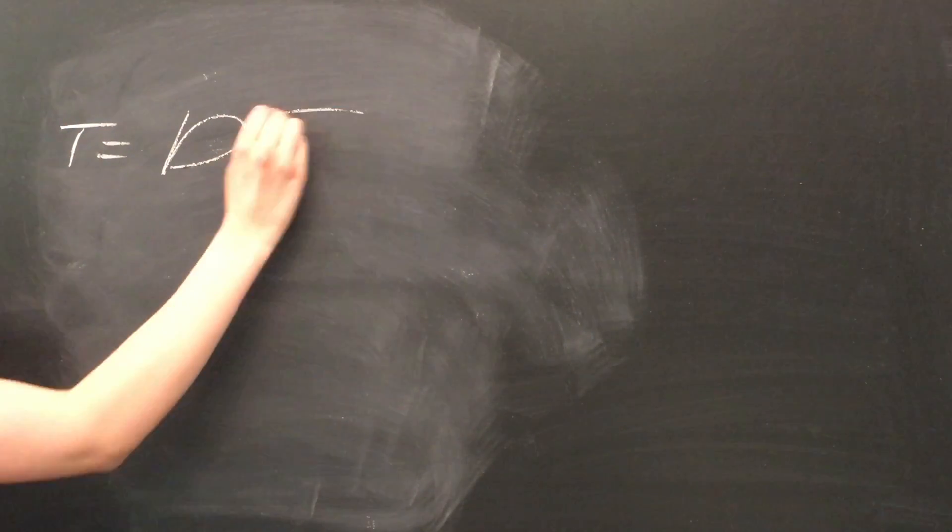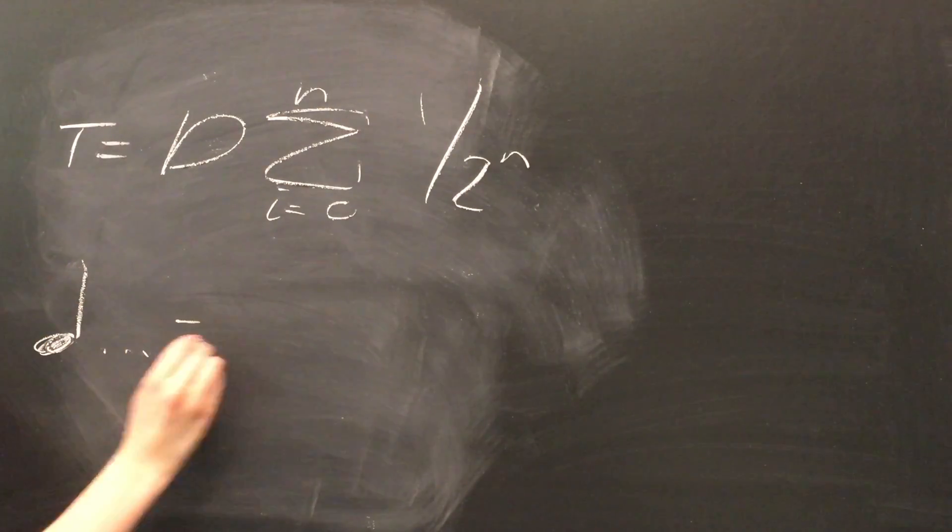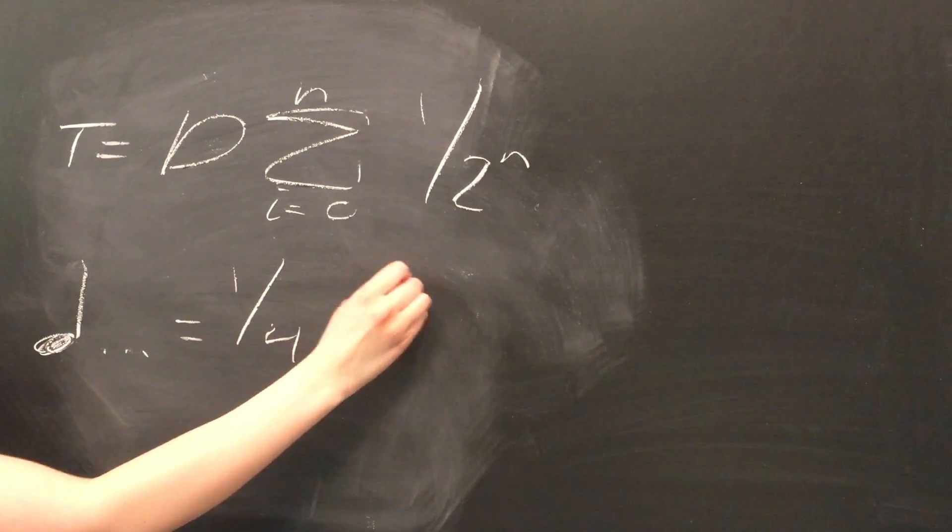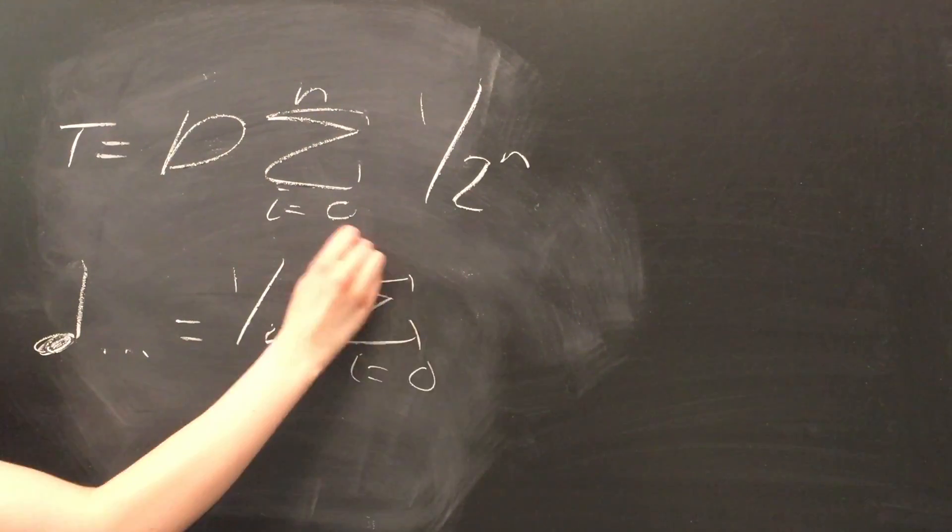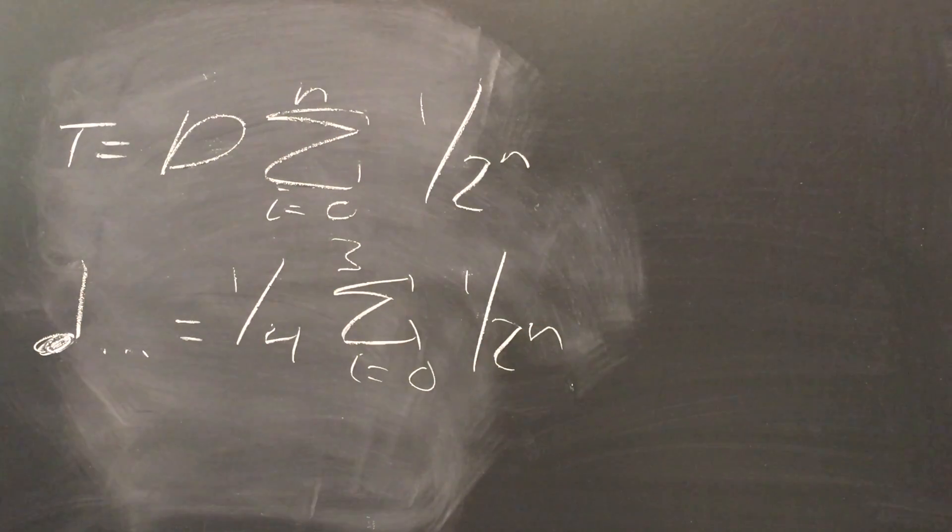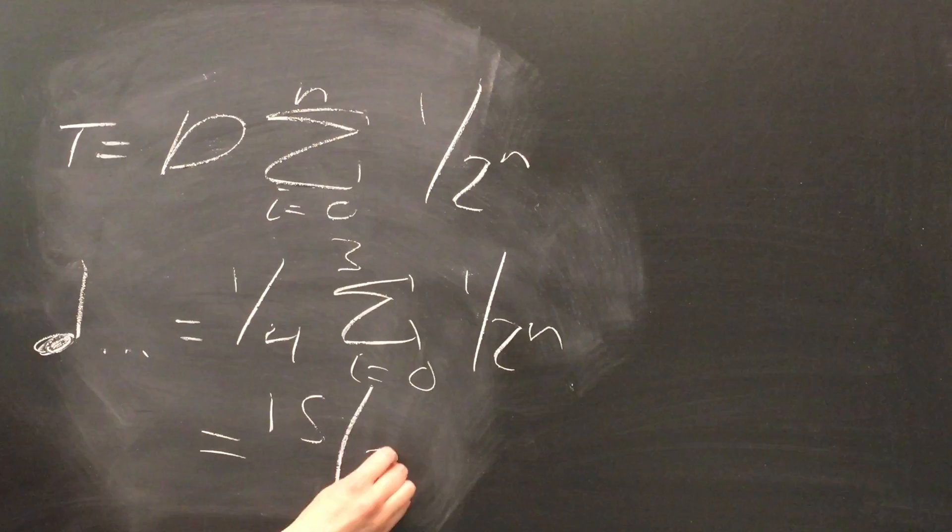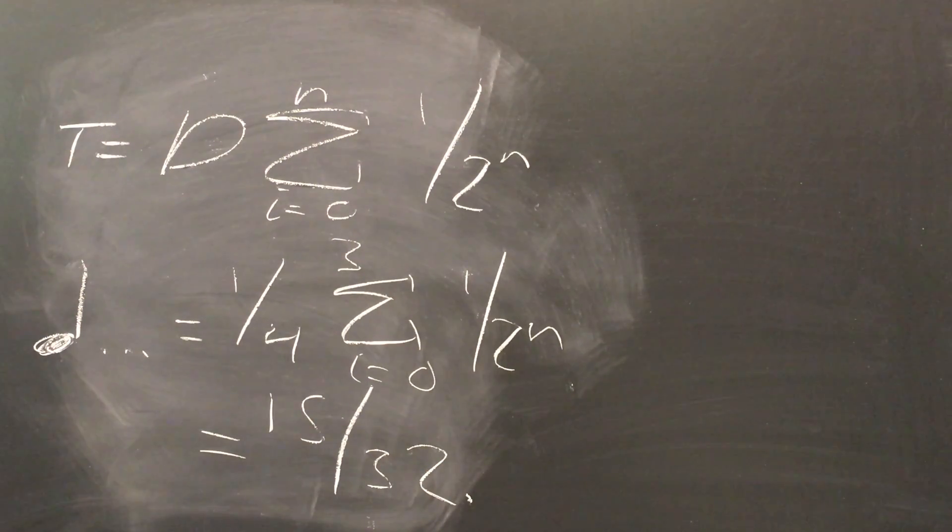We can express this process in summation notation using the following formula. T, the total duration of the note you're looking for, equals D times the summation from I equals zero to N, of 1 over 2 to the N, where D is the undotted note's duration, and N is the number of dots. So for this particular example, D is one-fourth, and N equals three. If we do the computation, we end up getting 15 over 32, or 15 thirty-second notes.